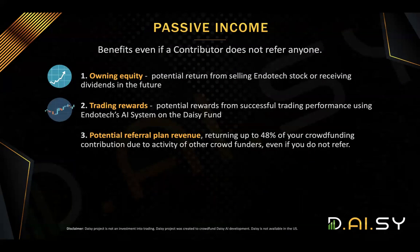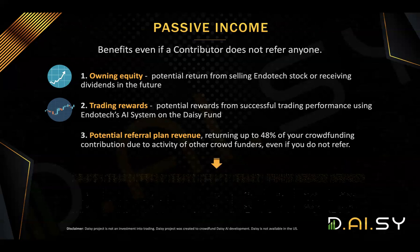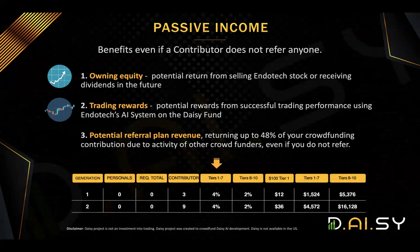One of the most frequently asked questions is: can I earn passively in DAISY without referring people to the smart contract? The answer is yes. There are three ways to earn on a passive basis. The first is owning equity that you can claim once Endotech goes public. The second is trading rewards — 50 to 70% of your funds will be traded and you can withdraw the trading rewards at any time. The third way is to earn from the metrics.